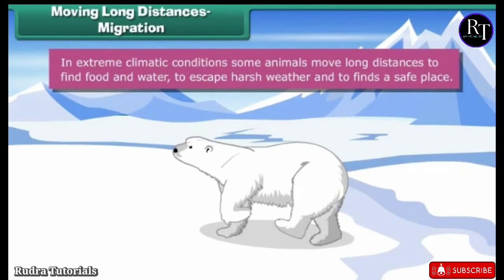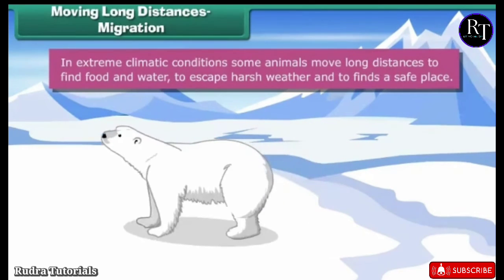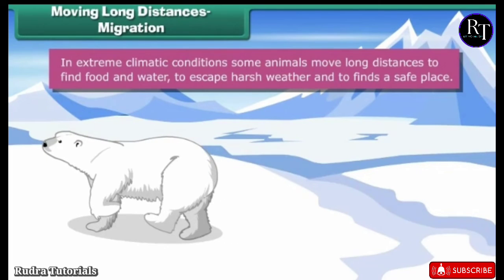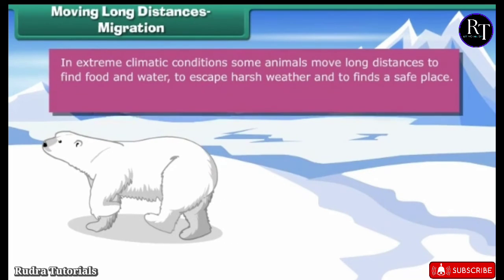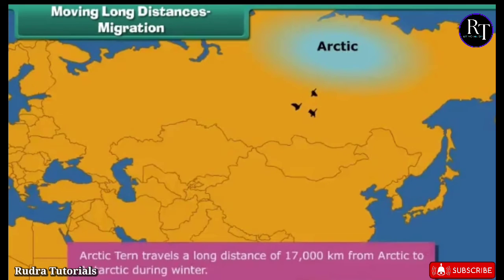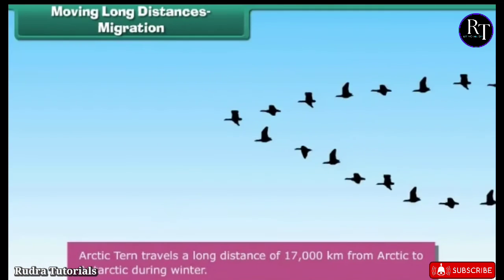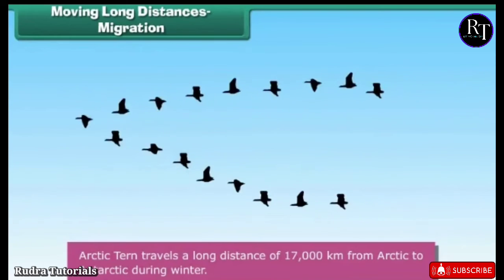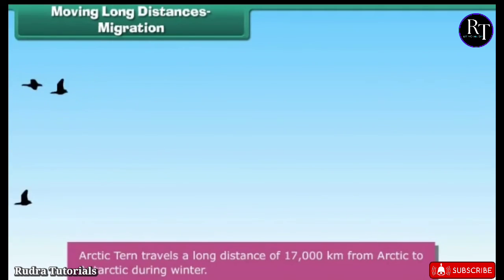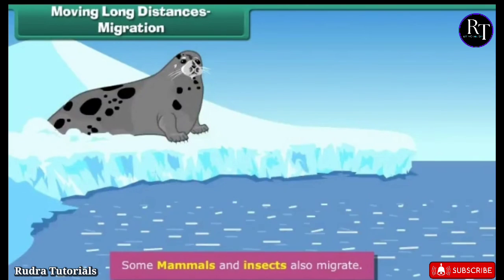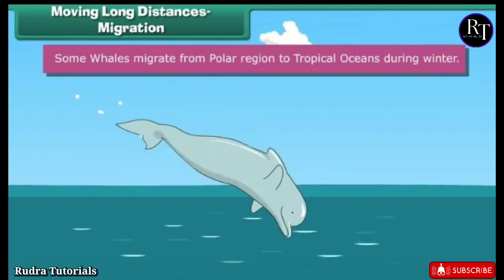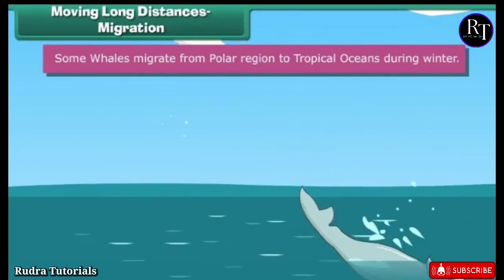In extreme climatic conditions, some animals move long distances to find food and water, to escape harsh weather, and to find a safe place. This is known as migration. The Arctic tern travels a long distance of seventeen thousand kilometers from the Arctic to Antarctic during winter. Some mammals and insects also migrate. Some whales migrate from polar regions to tropical oceans during winter.